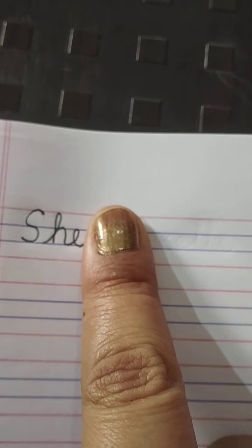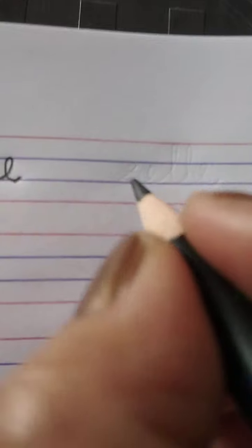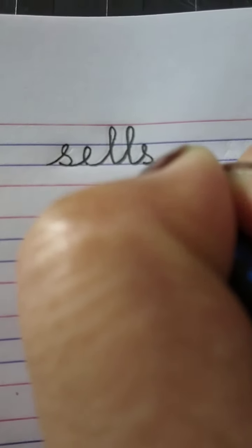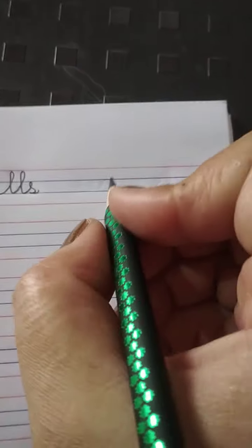Then you will give one finger space. Then S, E, double L, S. She sells. One finger space.